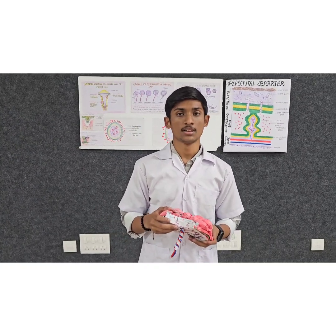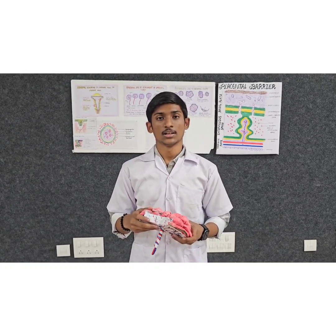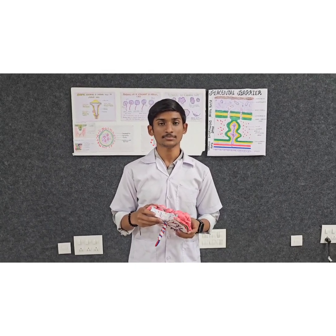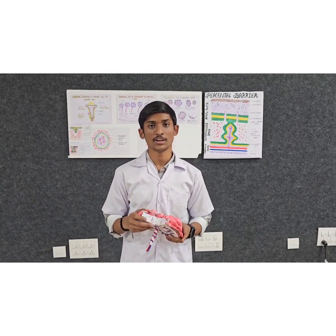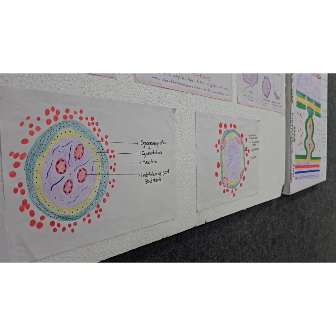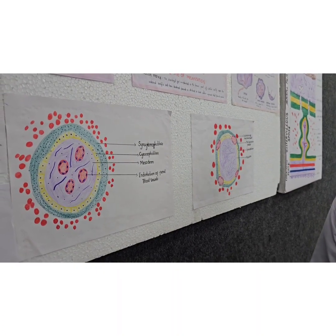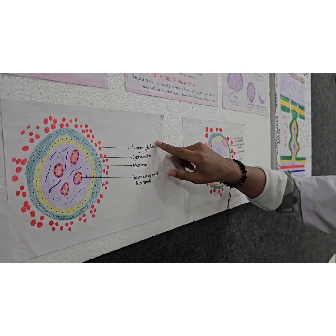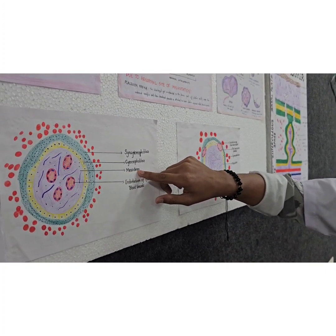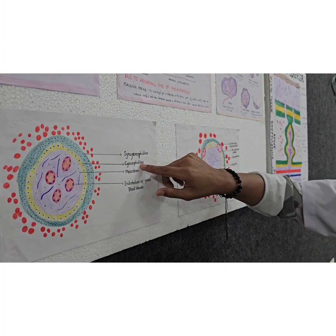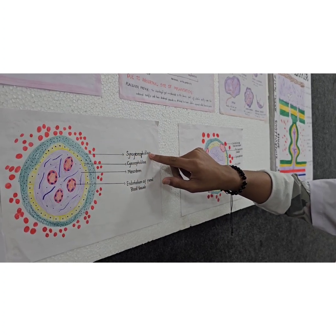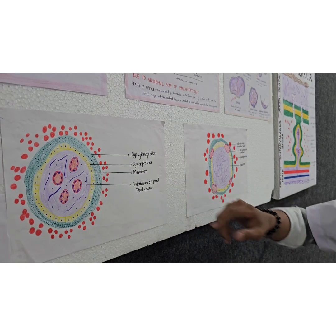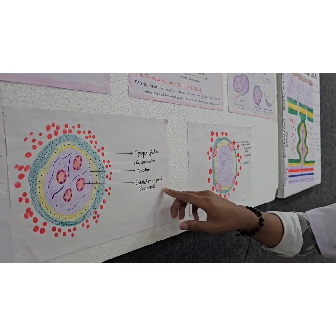In primary stem villi, the cytotrophoblast forms finger-like projections that invade the tubercle at its center. In secondary stem villi, the extra-embryonic somatopleuric mesoderm lying deep to the cytotrophoblast forms three layers: mesoderm, cytotrophoblast, and syncytiotrophoblast. In tertiary stem villi, there is development of blood vessels, including endothelial fetal blood vessels.